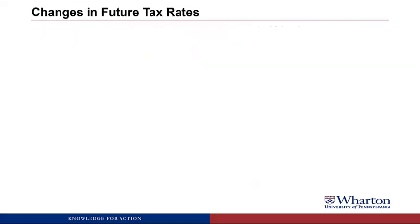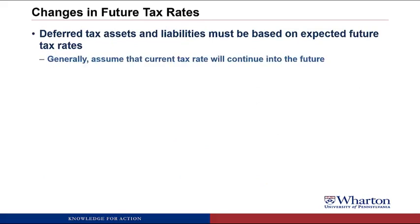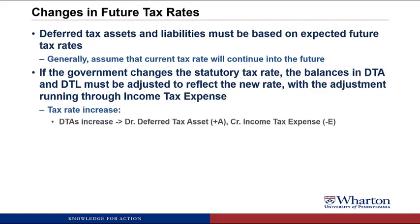Now we're going to throw a wrench in the calculation for deferred tax assets and liabilities — changes in future tax rates. Deferred tax assets and liabilities must be based on expected future tax rates. If the government changes the statutory tax rate, the balances must be adjusted to reflect the new rate, with the adjustment running through income tax expense. If the tax rate increases, deferred tax assets increase — debit deferred tax assets, credit income tax expense. Deferred tax liabilities also increase — debit income tax expense, credit deferred tax liability.